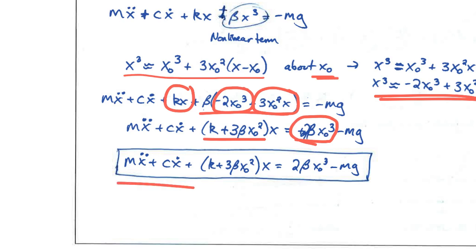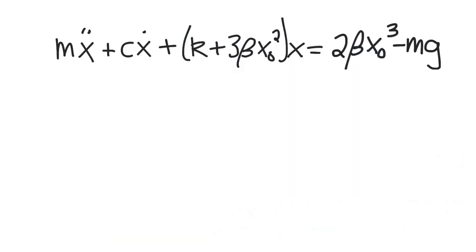This result is not quite in the most convenient representation. Because we've linearized about X-naught, we're assuming operation close to that point. It's useful to express the equation not in terms of X — the distance from the unstretched origin — but in terms of how far we are from the equilibrium point X-naught. So we use a change of variables, defining delta X as X minus X-naught.